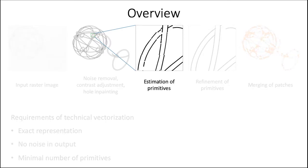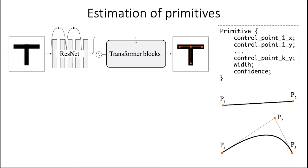Let's start with primitive estimation. To this end, we design the primitive extraction network. We extract convolutional features from the input image with a ResNet-based feature extractor, and then use a transformer-based neural network to estimate the position of the control points of the vector primitives and their widths.